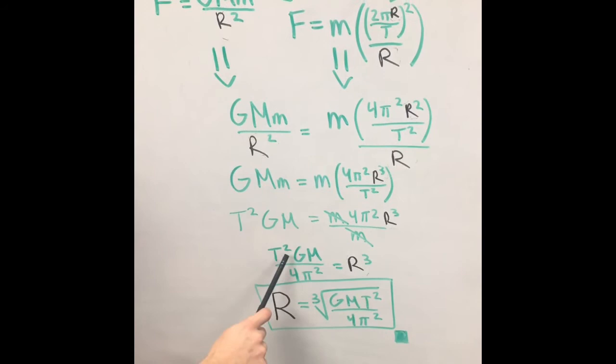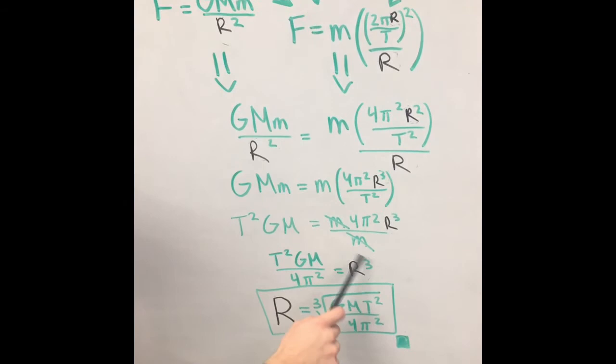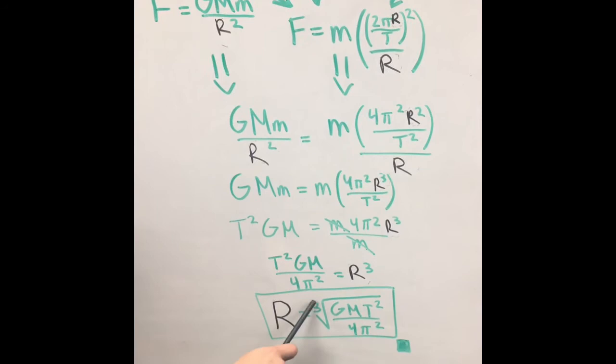We're left with t squared times big G times big M over 4 pi squared equals r cubed. So we take the cube root of both sides, and we're left with big R equals the cube root of G M t squared over 4 pi squared.